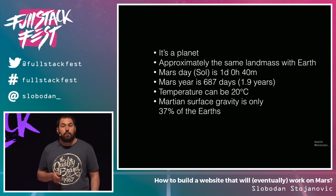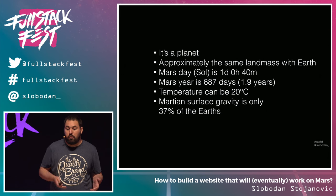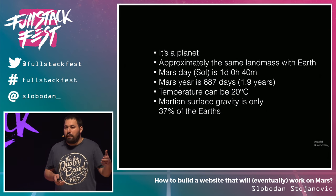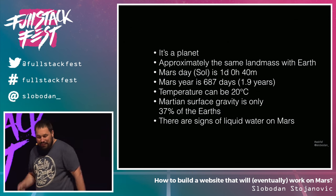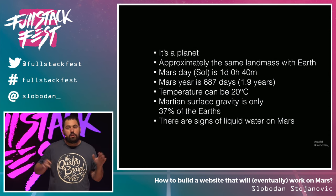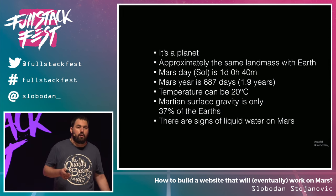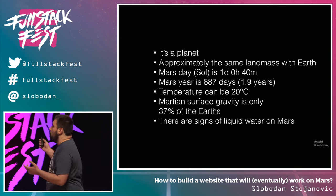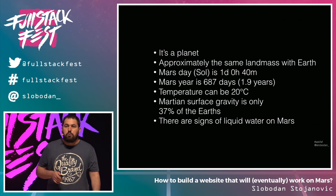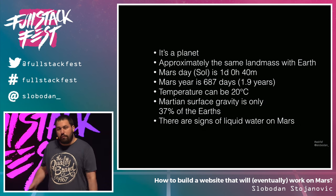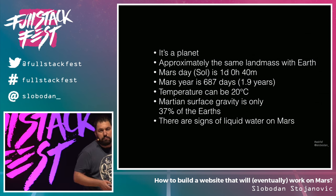The gravity on Mars is just 37% of Earth's gravity, which means you can jump much further — you don't even need an elevator from the second floor; you can just jump out the window and everything will be okay. There are also signs of liquid water on Mars, along with a lot of ice, and we need water for living. On top of that, the biggest mountain in the solar system is on Mars, much bigger than Mount Everest, and they have two moons — just imagine the night sky.